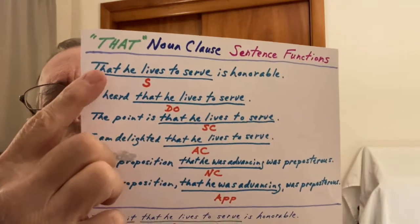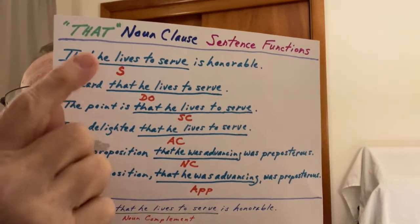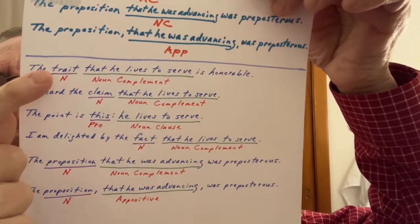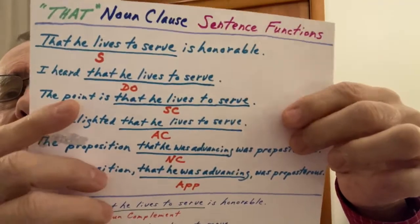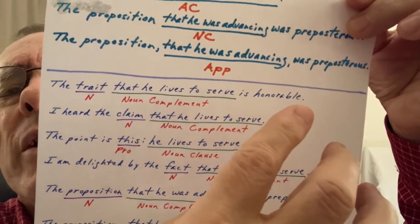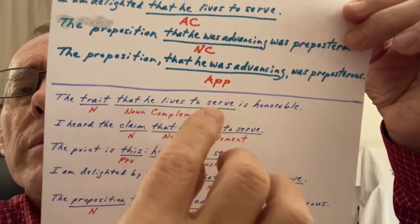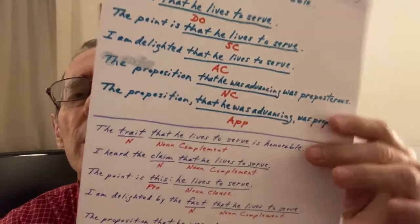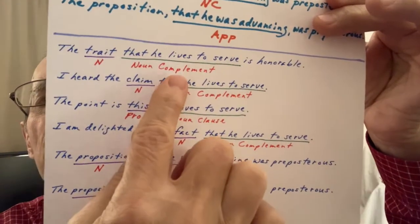Then I got to this page of notes — this is why I'm making this video today. This is the most critical one. Here we see the six example sentences, and down here we see the words and thoughts we actually think when we speak these sentences. We actually say, for example, 'the trait that he lives to serve is honorable.' In our mind, we're thinking 'the trait or the quality that he lives to serve,' but when we speak, we abridge it. We just say 'that he lives to serve is honorable.' This paper is important because we notice and discover something which I don't know of anyone else on the Internet or in any grammar books talking about.